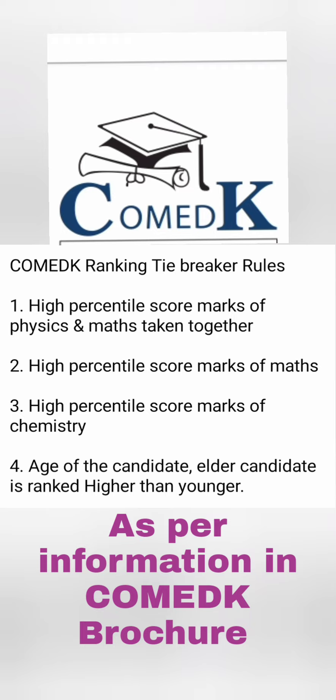If all of the above are still the same — including Chemistry marks — the last criteria used will be the age of the candidate. The younger candidate will have the better rank. So if you are younger with the same Chemistry score, Maths score, and combined Physics-Maths percentile, age is the final tiebreaker.